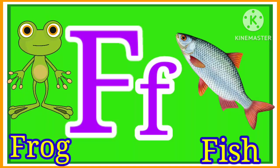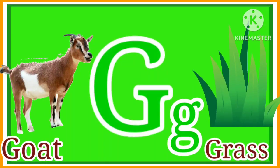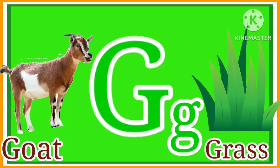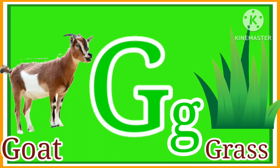E for egg and E for elephant. E, E, E. F for fish. F, F, F. G for goat and G for grass. G, G, G.